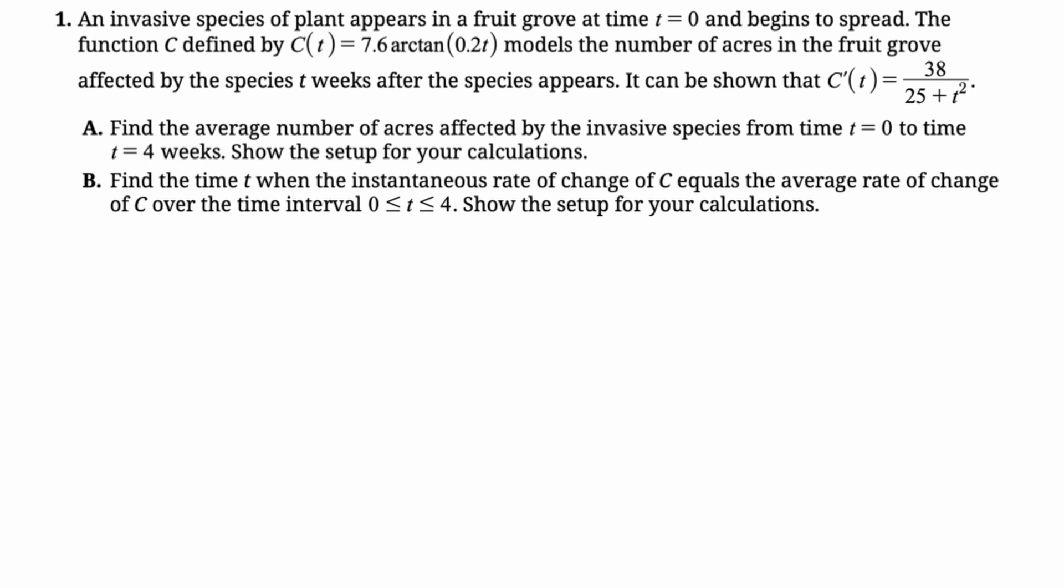Part A. Find the average number of acres affected by the species from T equals 0 to T equals 4. Show the setup. So average value, average number rather, is going to be the average value of the function that gives acres. So it's the average value of C of T on the interval from 0 to 4. That's integral divided by interval.